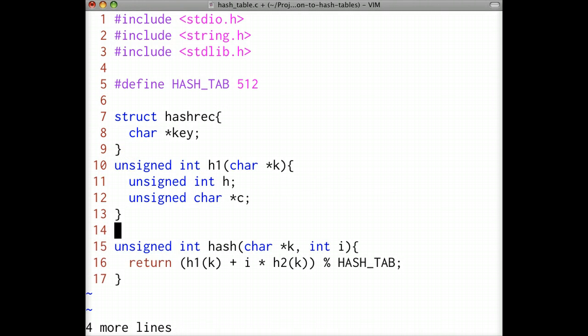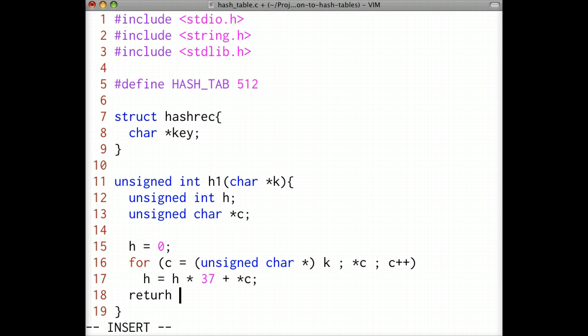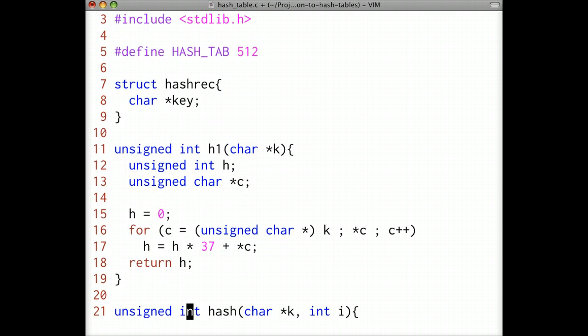Next we'll implement the h1 hash function. It takes a character string as an argument and returns the hash value for that character string. One simple and effective string hash function is to iterate through each character and add the character's value to the hash value computed so far. Here, c is a pointer to an unsigned character. In the C programming language, only printable characters are guaranteed to have positive integer values, therefore it's best to use the unsigned value for the characters when computing the hash. If dereferencing the c variable ever yields the null character, then the test condition in our for loop evaluates to false and the loop exits. The value 37 is a prime number that works well for hashing strings.